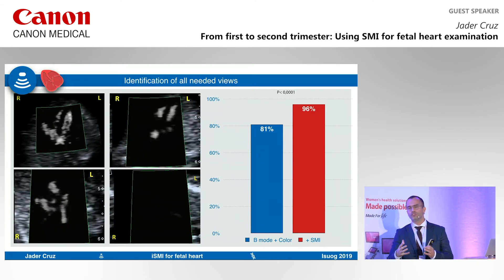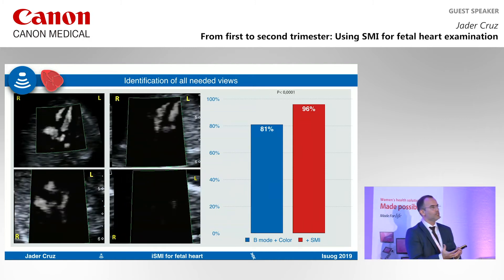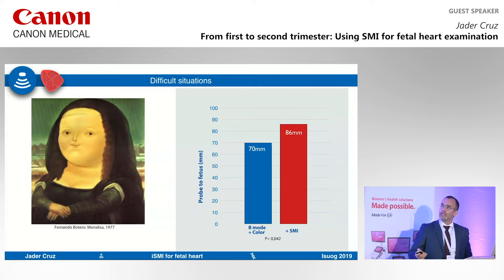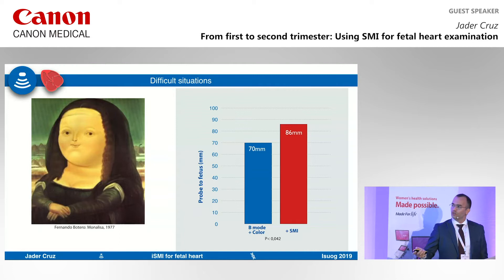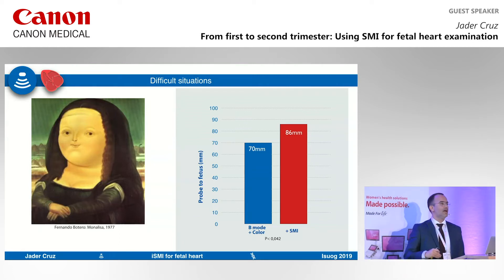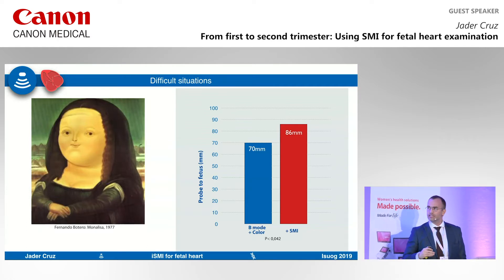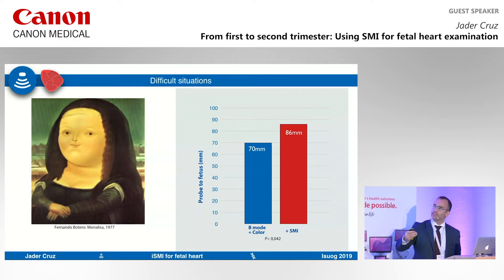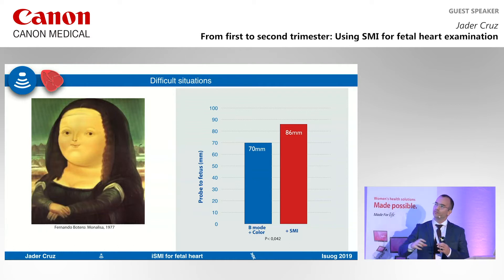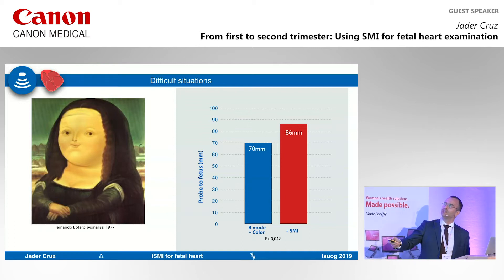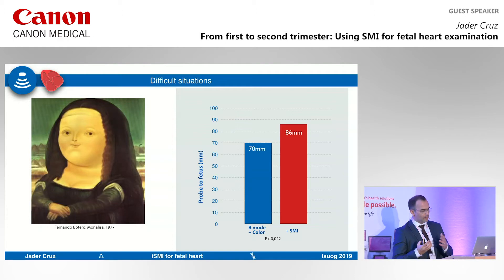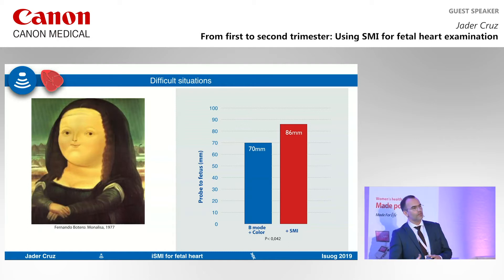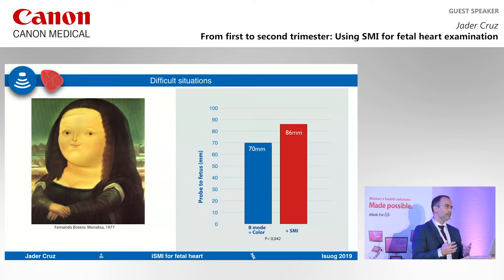Not only does SMI help you see individual structures, but the percentage of patients where you can see all sections in a single scan went from 81% to 96%. It also helps in the most difficult situations. Depth increases scanning difficulty, and the mean distance from probe to heart at which you can see all structures increased from 70 millimeters with B-mode and color Doppler to 86 millimeters with SMI, whether due to fat tissue, retroverted uterus, or other factors.